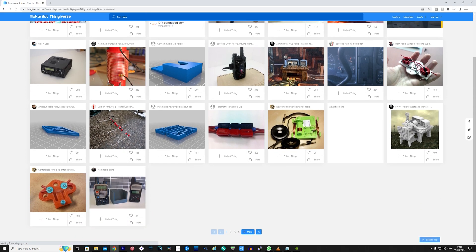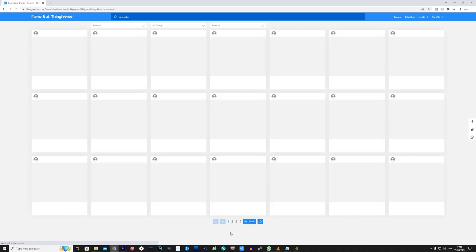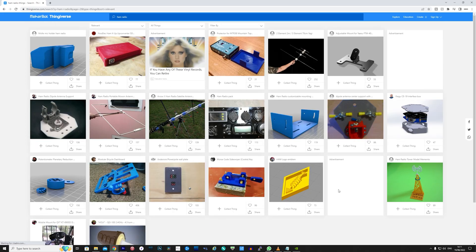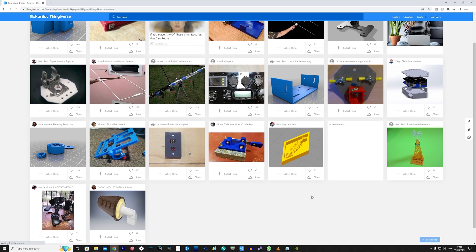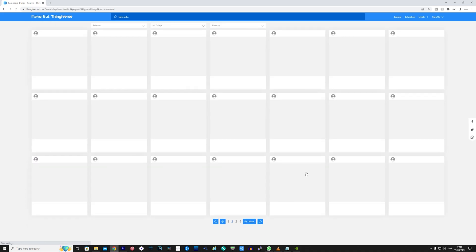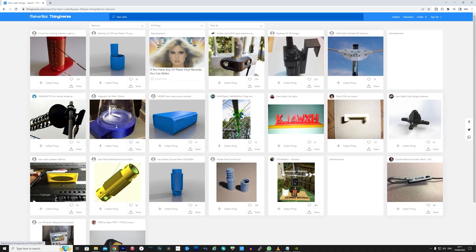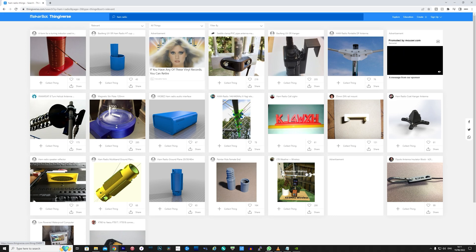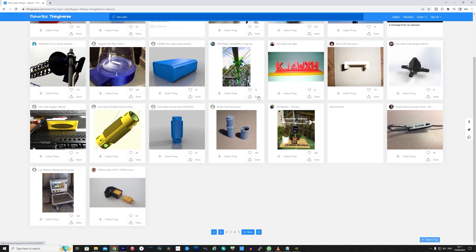A good resource of 3D printer models that have already been made and designed is from a website called Thingiverse. I'll just head there and type in ham radio in the search bar. You'll then be presented with hundreds of designs that have been uploaded by users for free for anyone to use.